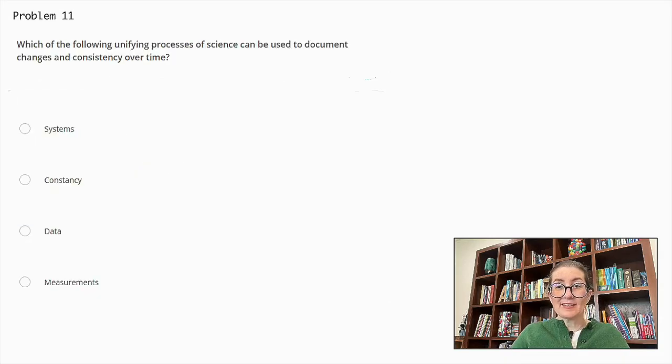Before beginning this question, I just wanted to point out that there are questions about the unifying processes of science across all categories. This being one of them. Which of the following unifying processes of science can be used to document changes and consistency over time? Systems, constancy, data, or measurements.